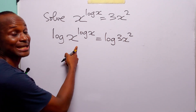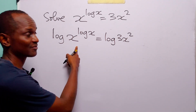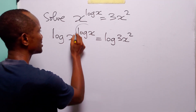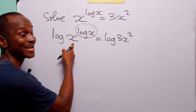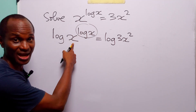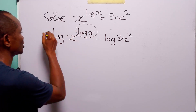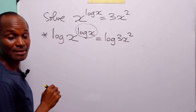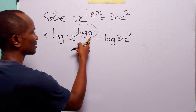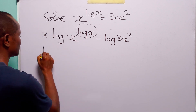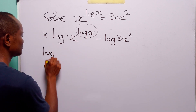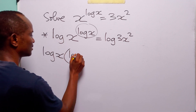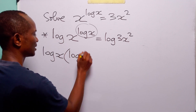Now let us apply the power rule of logarithms to the left hand side. That is the rule that says we can bring down the exponent of x, which is log x, to the front of the log term to become a multiplier. When we apply this rule, we have log x times log x.